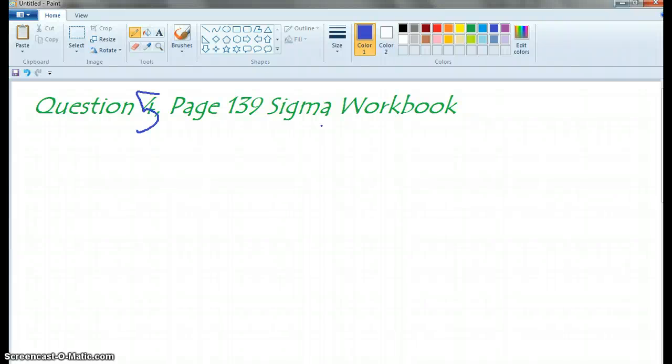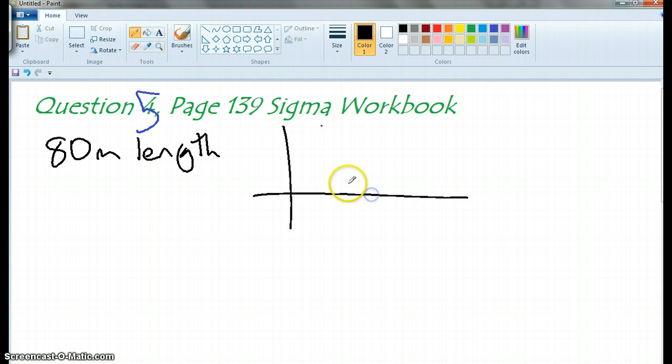Alrighty, a technician is testing an electric cable for a fault. The fault is equally likely to be anywhere in the 80 metre length of cable. So we've got 80 metre length. So it's likely to be anywhere from 0 to 80.